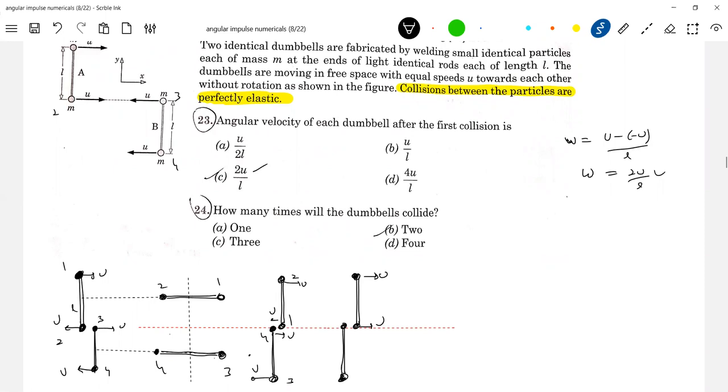U, this is U, this is U, this is U. So this is 2, 1, 4, 3. Finally, they will get separated. So how many collisions? 2 collisions will occur.